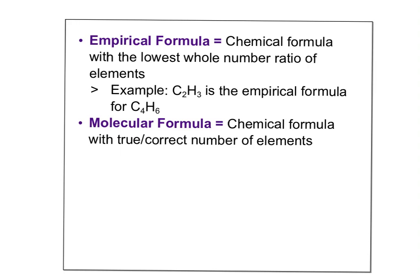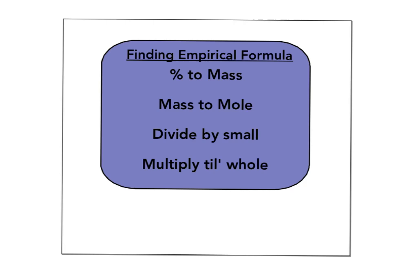So first, let's get some definitions. The empirical formula is a chemical formula written as the lowest whole number ratio. For example, C2H3 is the empirical formula of C4H6 — we reduced everything by 2 to get it. The molecular formula is the actual true ratio, the true numbers of each element. So C4H6 is the molecular formula because there are actually 4 carbons and 6 hydrogens.